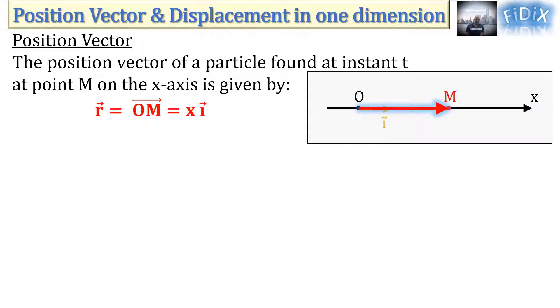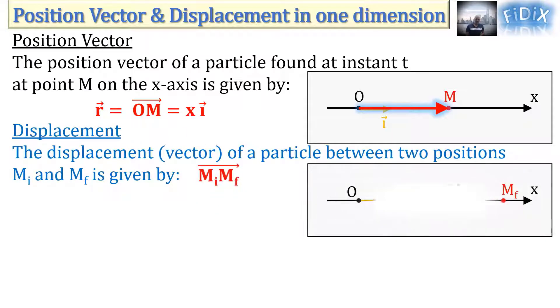The displacement of a particle between two positions MI and MF is given by vector MI MF, where MI is the initial position and MF is the final position of the particle. On the figure we can see the positions MI and MF and the displacement MIMF.